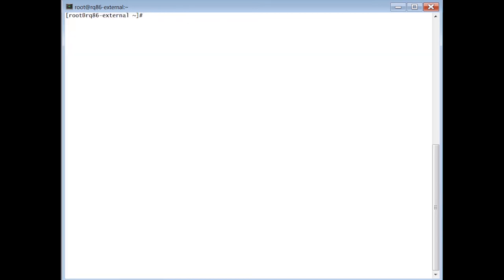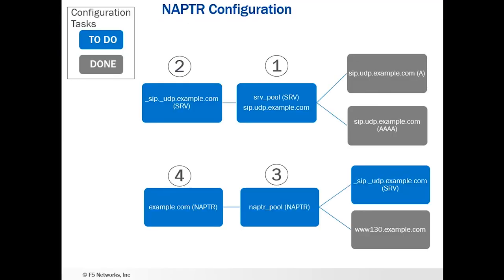Let's go back to our diagram. We've now completed our configuration, and we're seeing sip.udp.example.com A and Quad A responses, as well as www.130.example.com A and Quad A responses in our configuration.